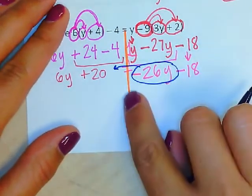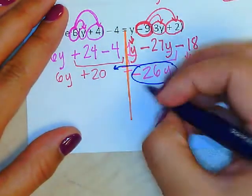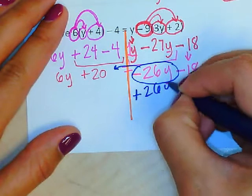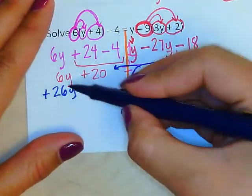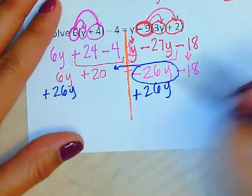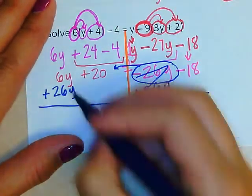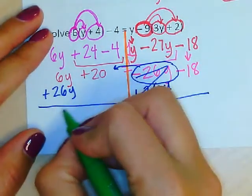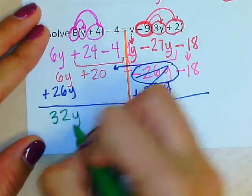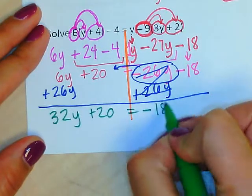To move, I can add or subtract only. Since this is minus 26y, to cancel it out I'm going to do plus 26y. What I do to one side, I do to the other. Notice how I line it up with the y's because they're like terms. These zero out. Here I have positive 32y plus 20 equals negative 18.